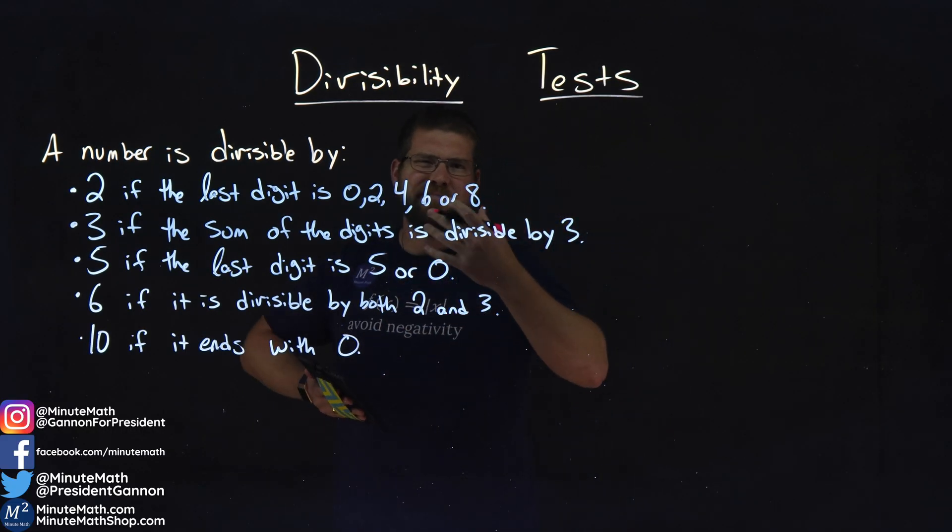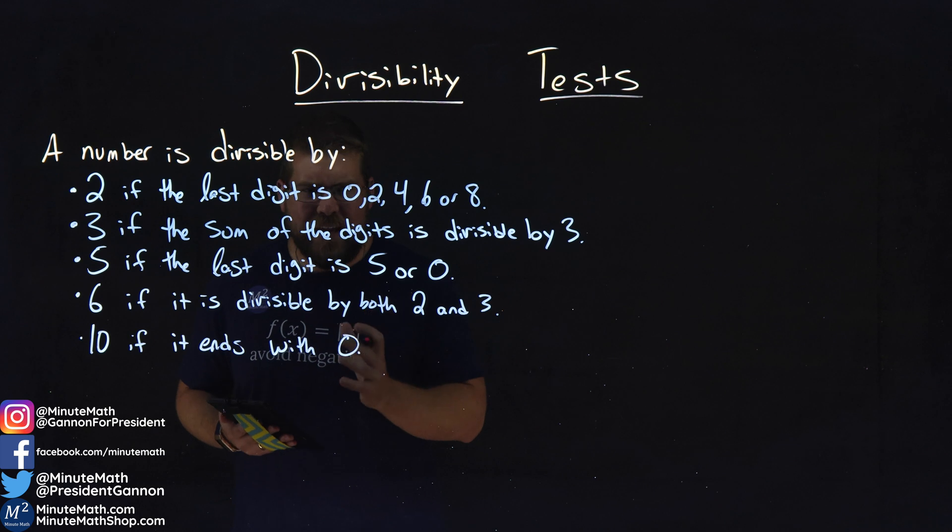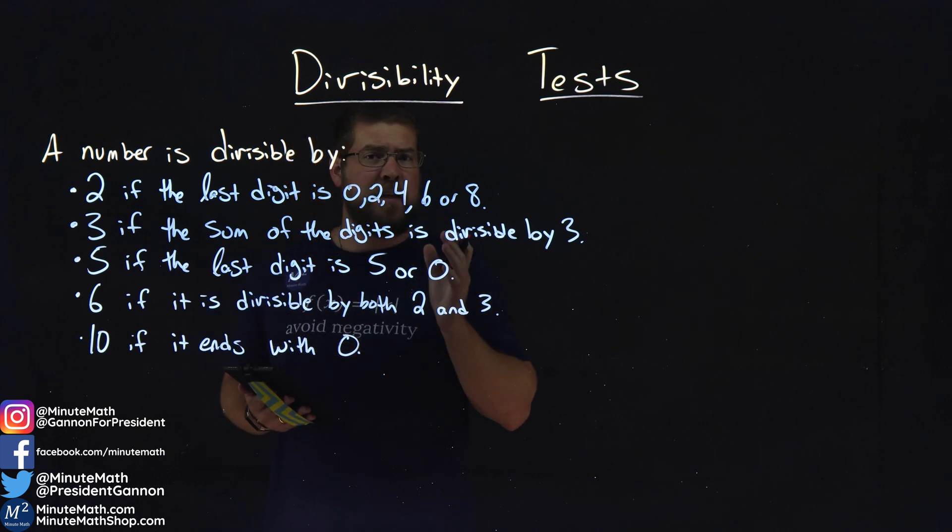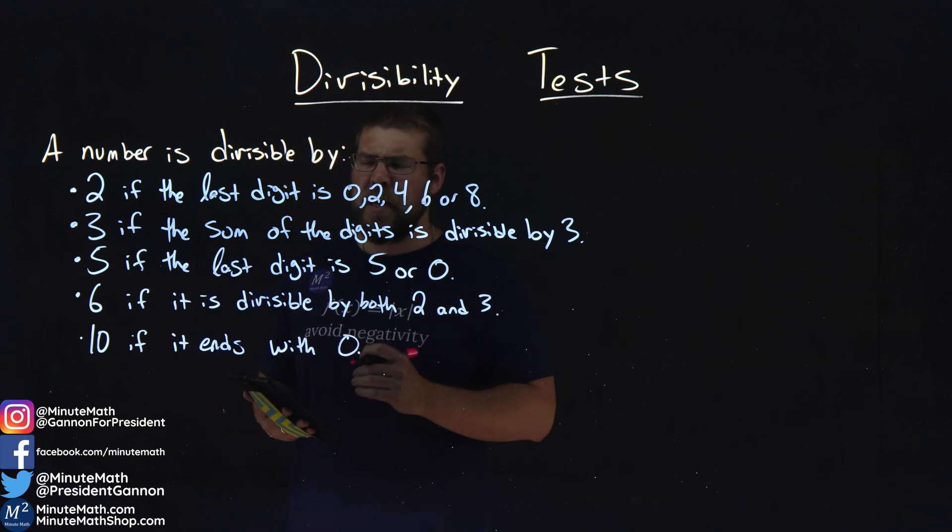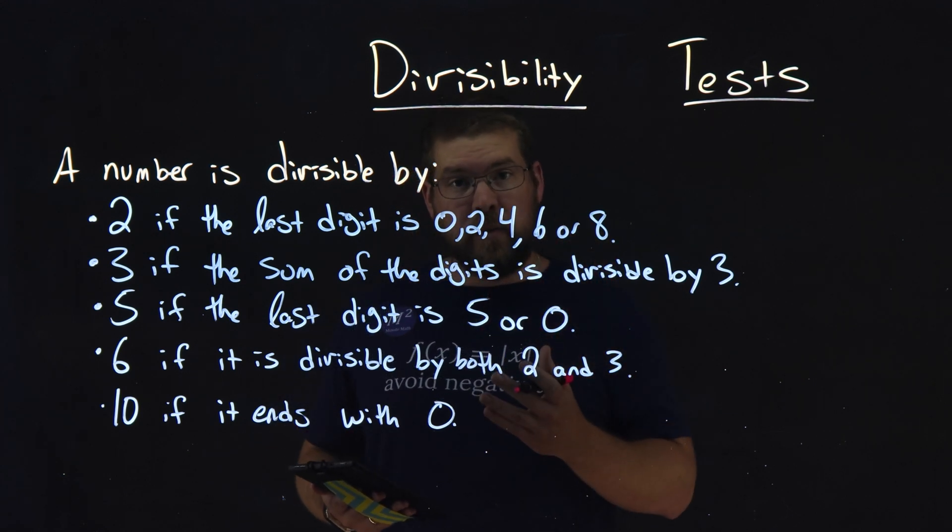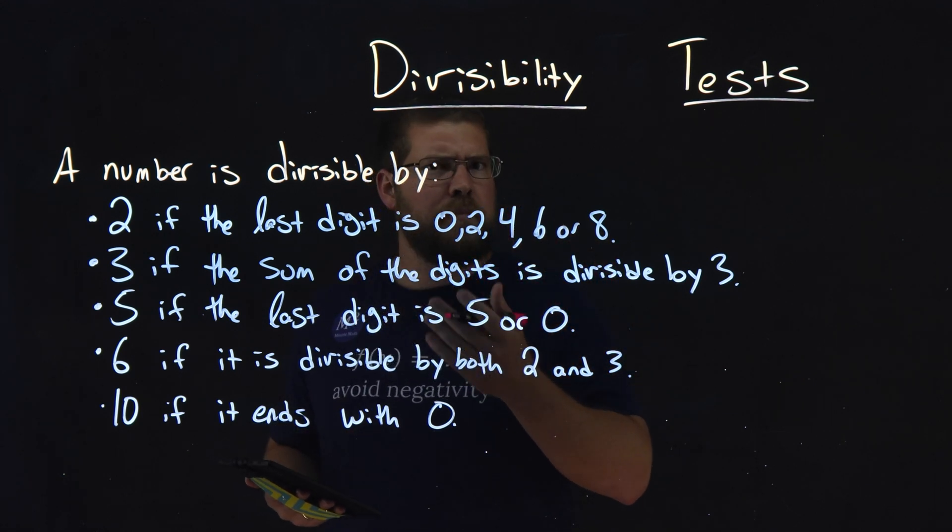Now, you may have seen this before. This is a beginning process of understanding factoring, which we'll learn later. But we're going to determine if a number is divisible by another number.